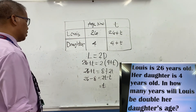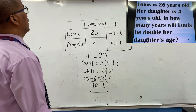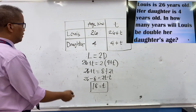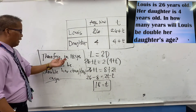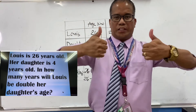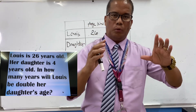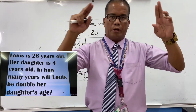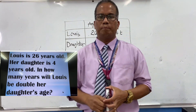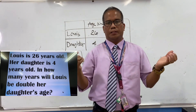So 26 minus 8 equals 18. Therefore t equals 18. In how many years will Louise be double her daughter's age? The answer is 18 years. Therefore, in 18 years Louise will be double her daughter's age. Using a table of values is the best and easiest method to solve age problems, though you can also solve algebraically.